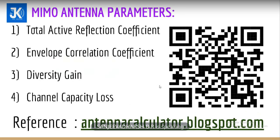These are the MIMO antenna parameters we are going to verify in this video. The first parameter is total active reflection coefficient (TARC). The second is envelope correlation coefficient (ECC). The third is diversity gain. The fourth is channel capacity loss. For reference, I have provided the Antenna calculator at Blockspot.com. The link is also in the description box and comment section.